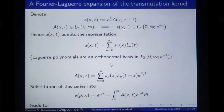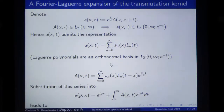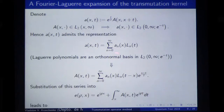Now, if I'm already in this space, then in this space there is an orthonormal basis called the Laguerre polynomials. This means that since A-small lives in this space, it immediately admits such a representation, where L_n are Laguerre polynomials and A_n are the coefficients we should find somehow.